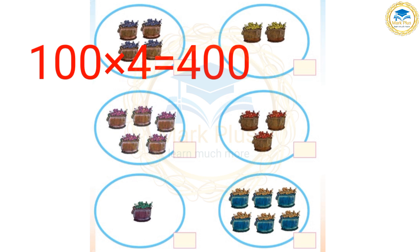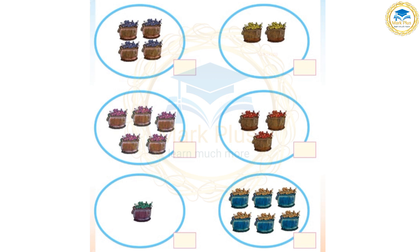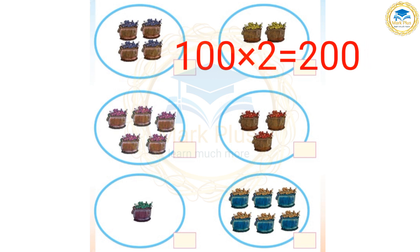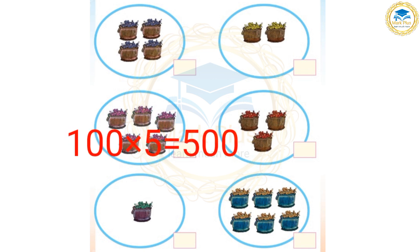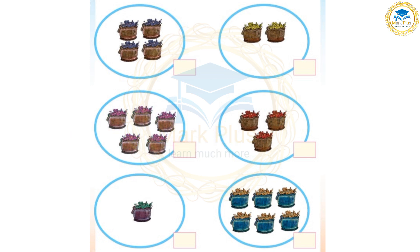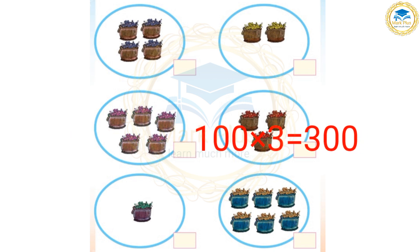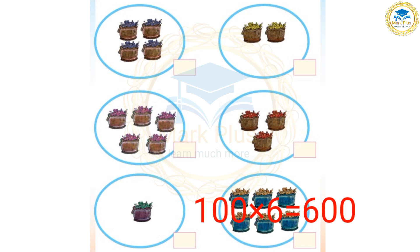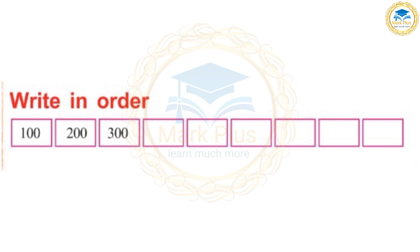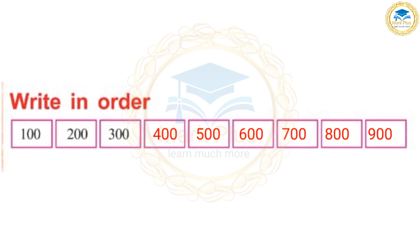4 baskets makes 400. Counting by 100s: 100, 200, 300, 400, 500, 600, 700. Write in order. How many flowers in order: 100, 200, 300, 400, 500, 600, 700.